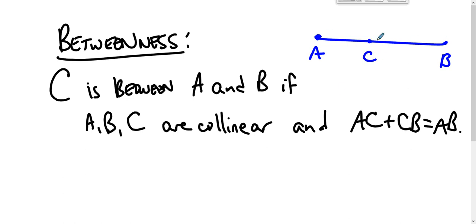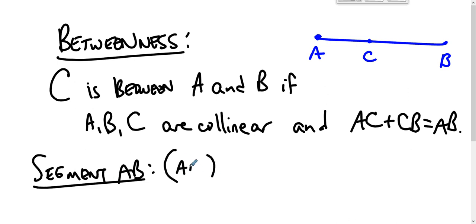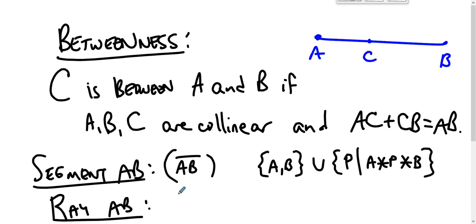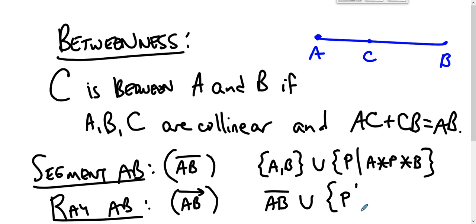C is between A and B if AC plus CB equals AB. We're building the geometry from scratch, so this is how it goes. We also define segment AB — denoted with an overline — as the set containing A and B, union the set of all points P that are between A and B. And we define ray AB — denoted with an over-right arrow — as the segment AB union the set of all points P such that B is between A and P.